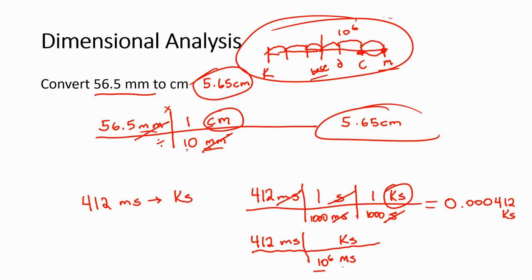Remember, keep the big number with the small unit in one kilosecond. Milliseconds cancel with milliseconds. And on my calculator, I just have to say 412 divided by 10 to the 6th. 0.000412 kiloseconds is still my answer.